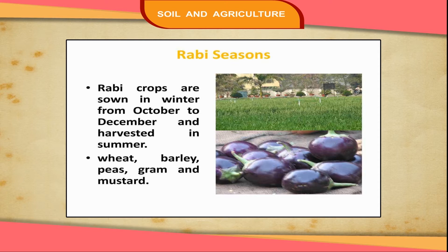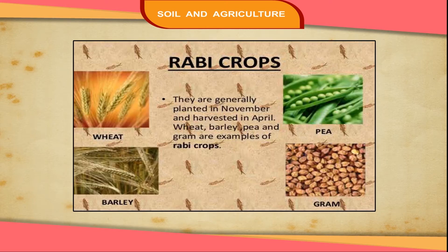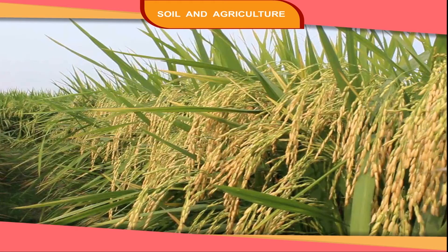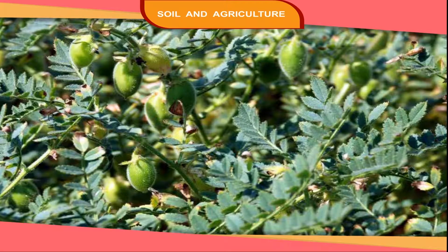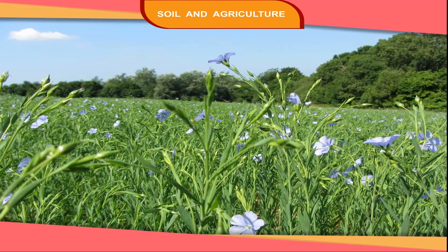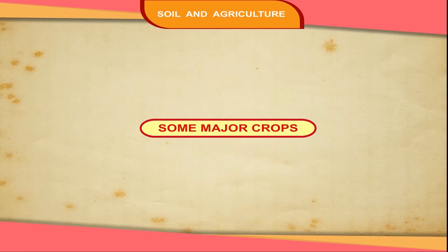The rabi season begins when monsoon ends and autumn starts. Crops grown in this season are called rabi crops. These crops are wheat, gram, barley, linseed and sugarcane.